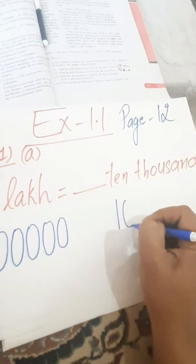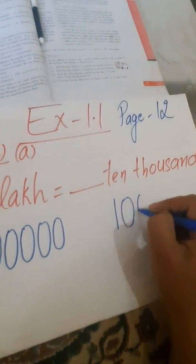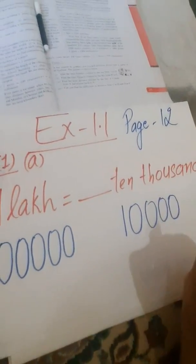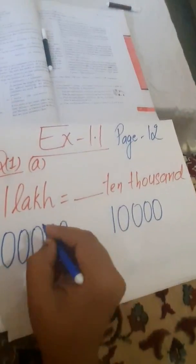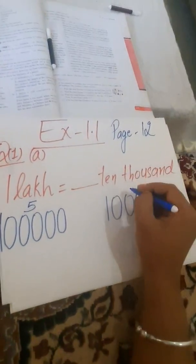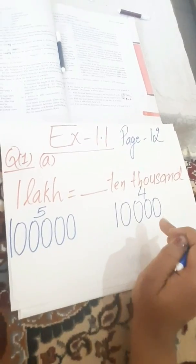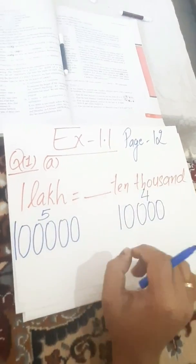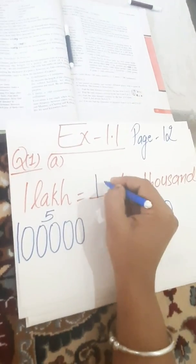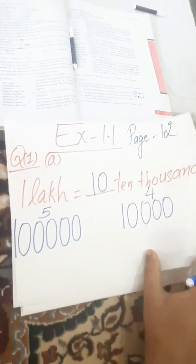In 10 I will write 1, 0. Adding 1,000, there are 3 more zeros: 1, 2, 3. Now in 1 lakh there are 5 zeros and in 10,000 there are 4 zeros. So how many more zeros are required so that both will be equal? It requires 1 more zero. So I will write 10. This is the A part.